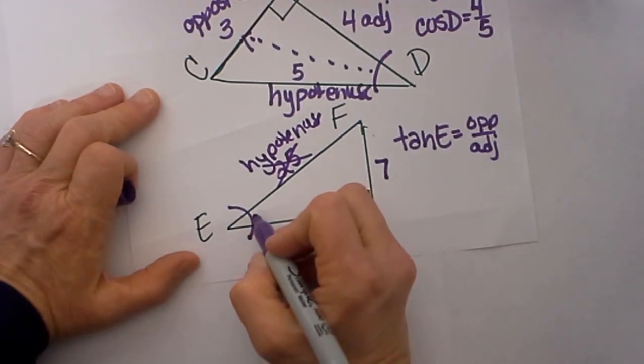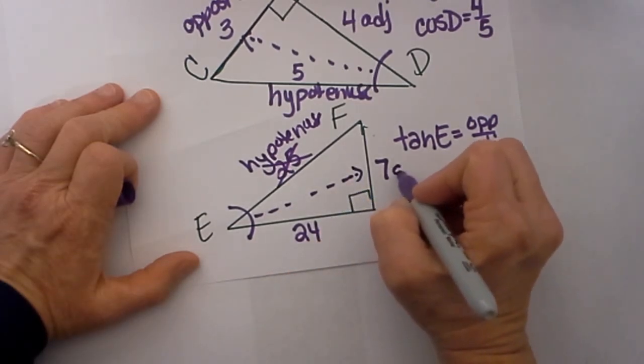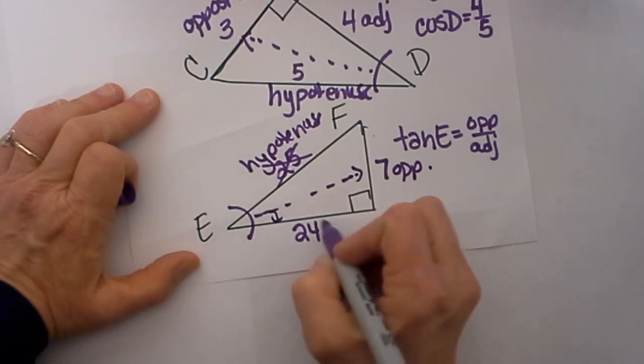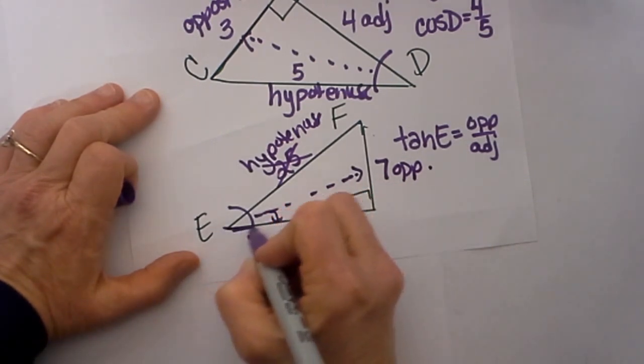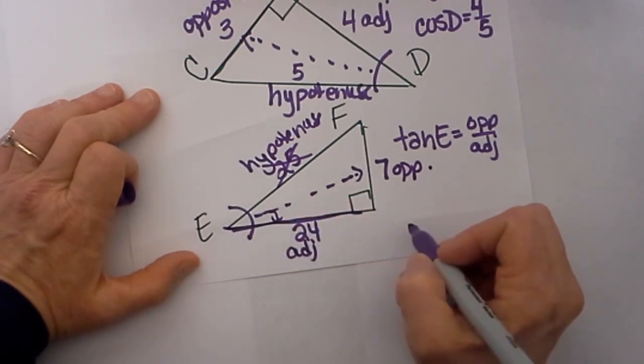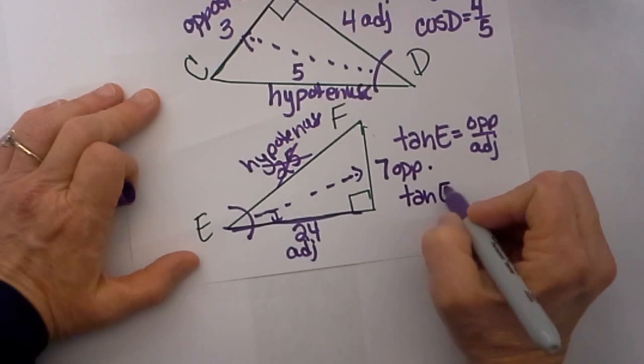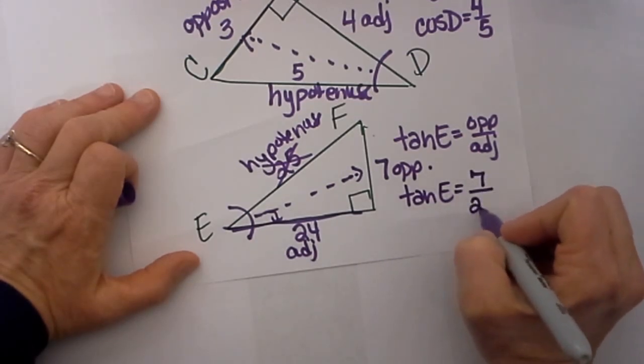Now from angle E I am going to draw across the triangle. That is my opposite side, 7. 24 is my only other side, it is the adjacent, and yes it does help form the angle E, it is one of the sides of E. So my ratio would be the tangent of E is equal to 7 over 24.